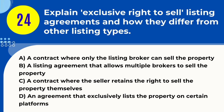Question 24. What is an exclusive right to sell listing agreement? A. A contract where the seller retains the right to sell the property themselves. D. An agreement that exclusively lists the property on certain platforms. Answer: A. A contract where only the listing broker can sell the property. Explanation. An exclusive right to sell listing agreement grants one broker the exclusive right to sell the property. Even if the seller finds a buyer independently, the exclusive broker is still entitled to a commission.